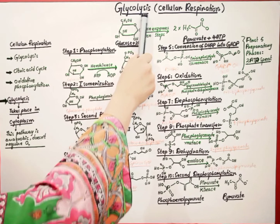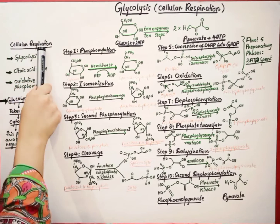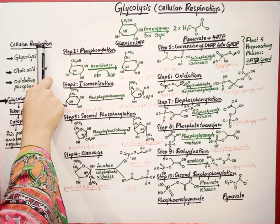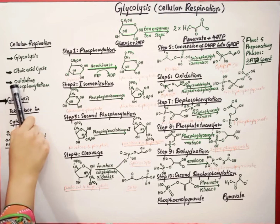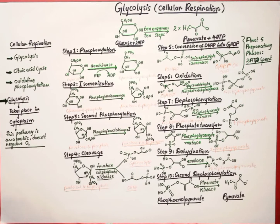Here we have glycolysis, and glycolysis is one of the pathways of cellular respiration. Cellular respiration is a metabolic reaction that takes place within the cells of organisms in order to convert chemical energy into ATP — the energy currency required for all our cellular processes. Cellular respiration depends on three pathways: glycolysis, citric acid cycle, and oxidative phosphorylation. Glycolysis takes place in the cytoplasm and is an anaerobic process, which means it doesn't require oxygen.